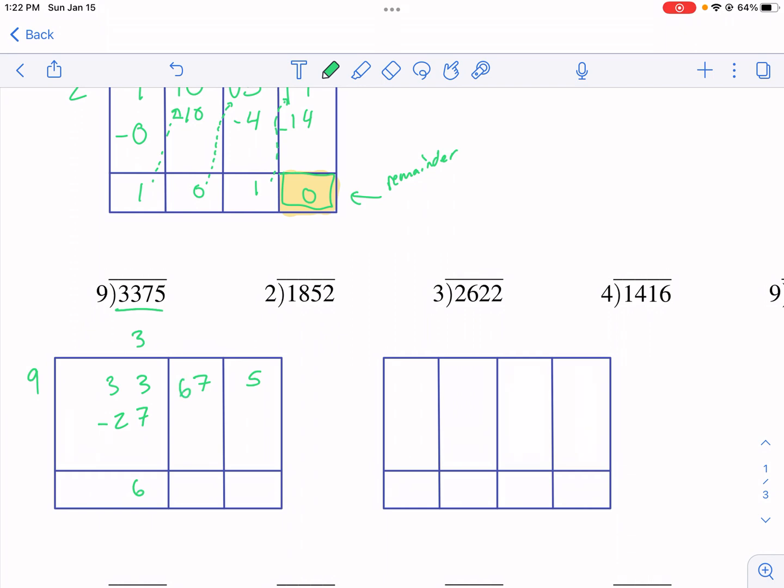9 goes into 67 seven times, and that's 63. So I get a remainder of 4. Now it's 45, so I have 5. 9 goes into 45 five times, and that number is 45, remainder 0. Anytime you get remainder 0, I think it's a good thing. I don't need to worry about a remainder. So I just know it's 375 exactly. Kind of an interesting problem there.